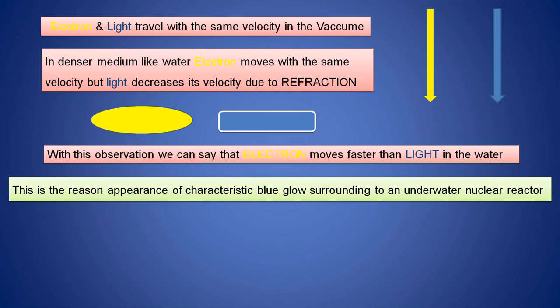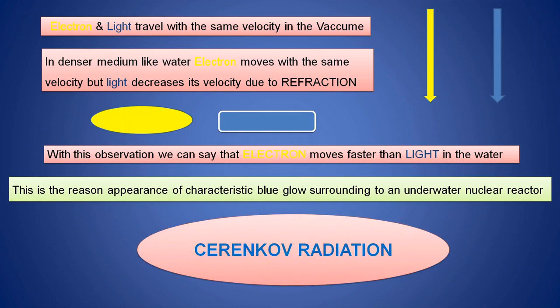This leads to, or this is the reason for, the appearance of a characteristic blue glow surrounding underwater nuclear reactors. This appearance of a blue color or blue glow around underwater nuclear reactors is known as Cherenkov radiation. Cherenkov radiation is mainly due to the greater velocity of the electron than light in a denser medium.